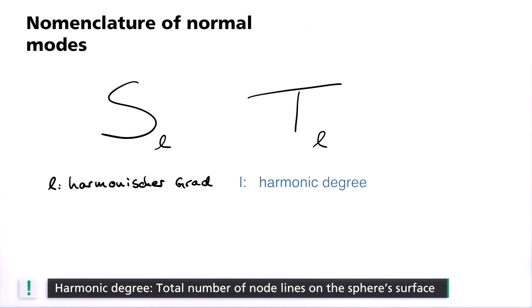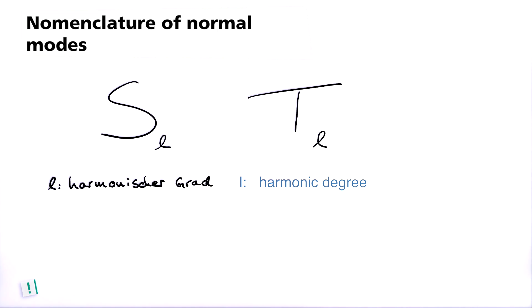The normal modes of the Earth are described via a nomenclature. Spheroidal modes are identified with S and toroidal modes with T. Three integer indexes describe each mode. Firstly, small l. This is the harmonic degree of the mode and for spheroidal modes, it indicates the number of node lines on the sphere's surface. The node lines correspond to the node points of the oscillating string in 1D.